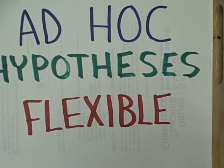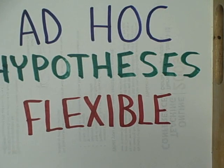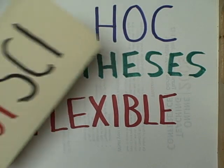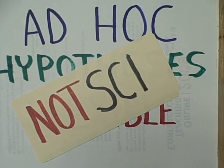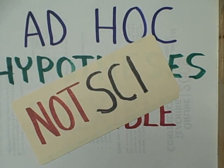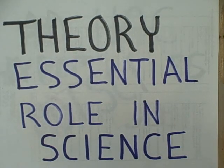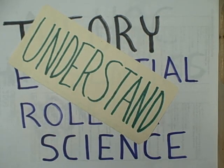The kinds of hypotheses that are not scientific are known as ad hoc hypotheses. These are hypotheses that are so flexible that regardless of whatever kind of data we observe, the theory cannot be really tested. So ad hoc hypotheses are not scientific. But true scientific theories have an essential role in science, and that role is to help us understand, predict, and control.